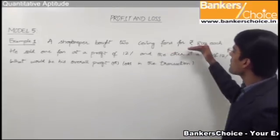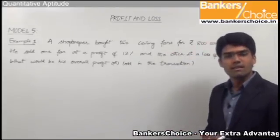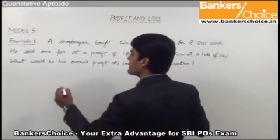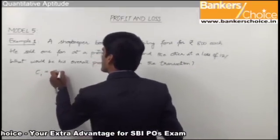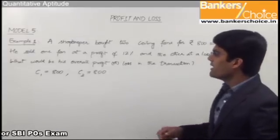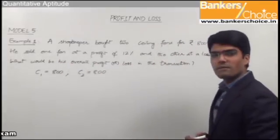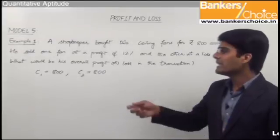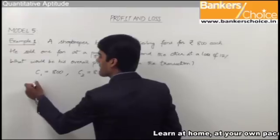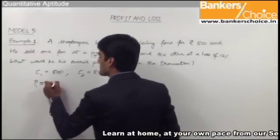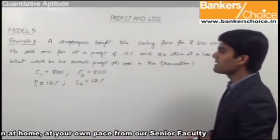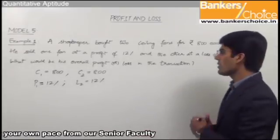The shopkeeper bought two fans for Rs. 800 each. The price you pay to buy an article is its cost price, so the cost price of both fans is Rs. 800 each — CP1 = Rs. 800 and CP2 = Rs. 800. He sold one fan at a profit of 12% (P1 = 12%) and the other at a loss of 12% (L2 = 12%). From this data we find the overall profit or loss.